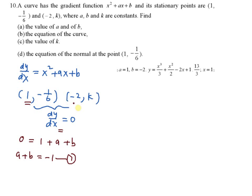The second equation: x equals negative 2, dy/dx equals 0, because both are stationary points. So you have dy/dx equal to 0, x equal to negative 2 — negative 2 squared is 4, minus 2a plus b. So you have 2a minus b equal to 4. This is the second equation.